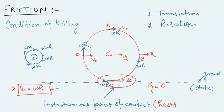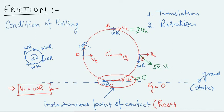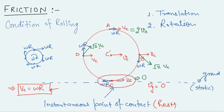If the surface is not stationary but moving with velocity v1, then the rolling condition becomes vc − omega·r = v1, since the relative velocity at the point of contact must equal the surface velocity. This generalized rolling condition will be very useful when solving rolling problems where you need to find relative velocities at the contact point.